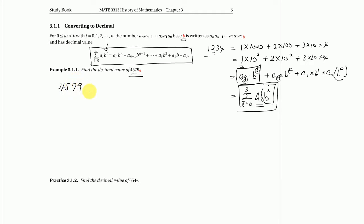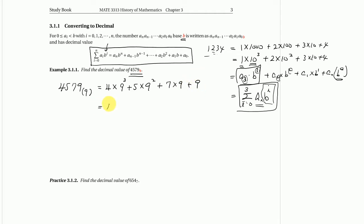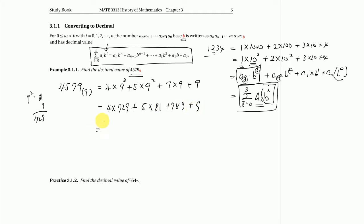Let's practice: convert 4579 in base 9 to decimal. We still read it as four-five-seven-nine, but our base is 9. So it's 4 times 9 cubed, plus 5 times 9 squared, plus 7 times 9, plus 9. That gives us 4 times 729, plus 5 times 81, plus 7 times 9, plus 9. The result is 3393 in decimal.